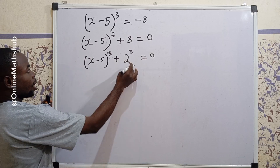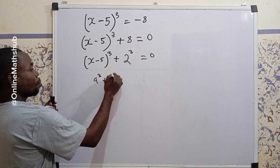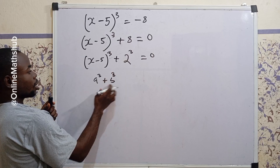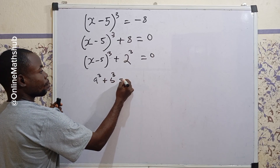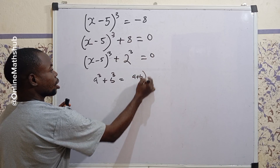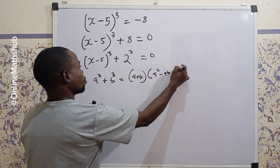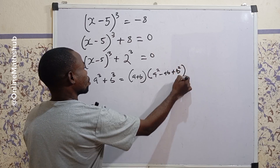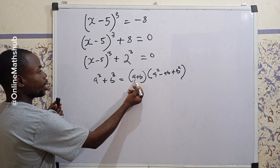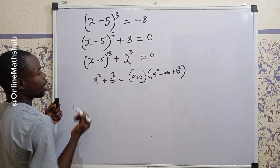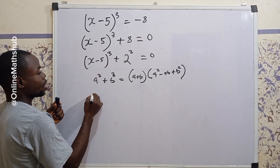You can see that this is now in the form a³ plus b³, which is the sum of two cubes. This can be expanded as (a plus b) multiplied by (a squared minus ab plus b squared). I'm going to use this expansion, where in this case a is equal to (x minus 5) and b is equal to 2.